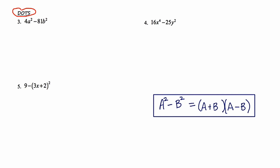The question might be: how do we know if something is a candidate for the DOTS technique? Well, the D in DOTS stands for difference, so in between your terms you need to have a subtraction symbol. And the terms that surround the subtraction need to be things that you can take the square root of — so we'll call that 'square rootable.'